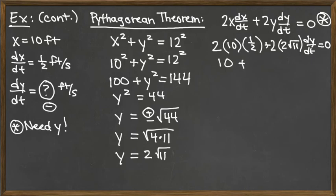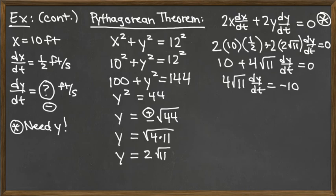So the next term here we've got 2 times 2 root 11. So we could do 2 times 2, which is 4 square root of 11 dy/dt equals 0. And we're trying to solve for the dy/dt. So let's move the 10 to the other side through subtraction. So that would be 4 root 11 dy/dt equals negative 10. And to get dy/dt by itself, we then divide both sides by the thing sitting in front of dy/dt. So that would be our negative 10 over 4 root 11.